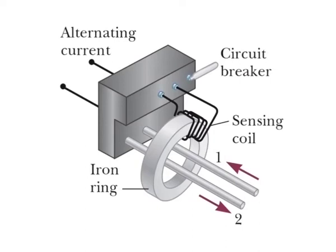If the return current in wire two changes so that the two currents are not equal — which can happen if, for example, the appliance becomes wet, enabling current to leak to ground — circular magnetic field lines exist around the pair of wires and the net magnetic flux through the sensing coil is no longer zero. Because household current is alternating, meaning its direction keeps reversing, the magnetic flux through the sensing coil changes with time, inducing an EMF in the coil. This induced EMF is used to trigger a circuit breaker which stops the current before it reaches a harmful level.